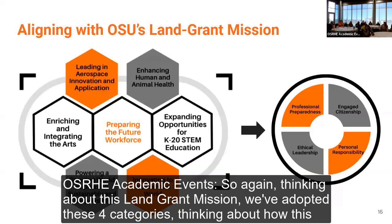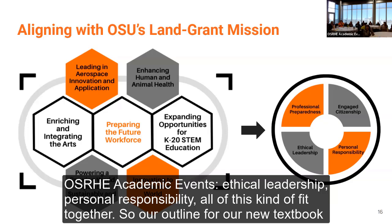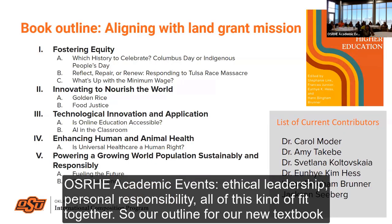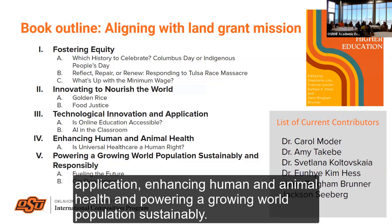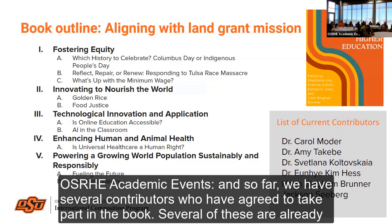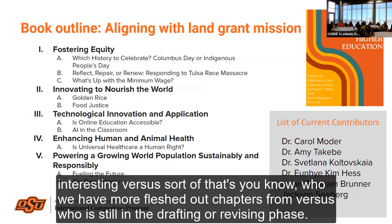Thinking about the land-grant mission, we've adopted four categories for the textbook, Simulations for Critical Discussion: fostering equity, innovating to nourish the world, technological innovation and application, enhancing human and animal health, and powering a growing world population sustainably. So far, we have several contributors who have agreed to take part in the book. Several chapters are already drafted and ready to go; some are still in progress.